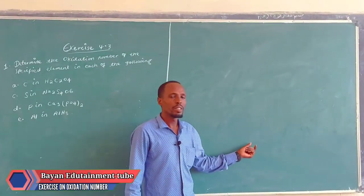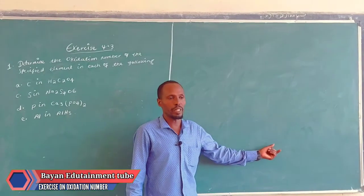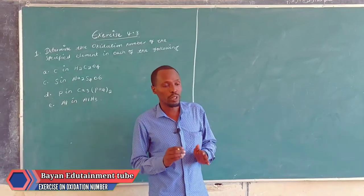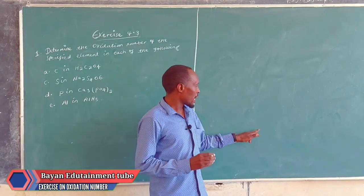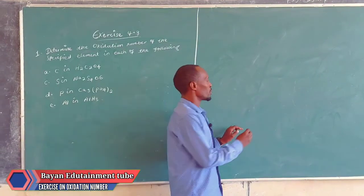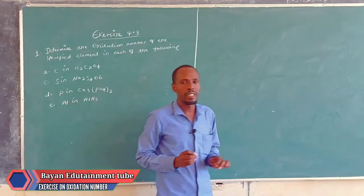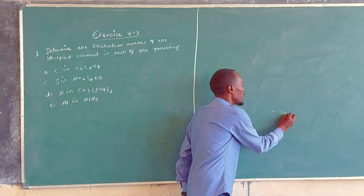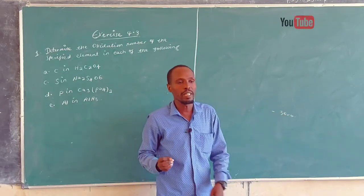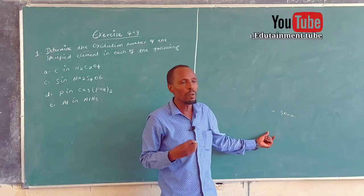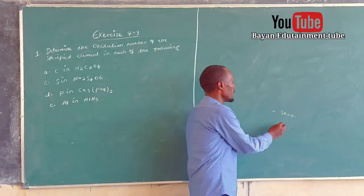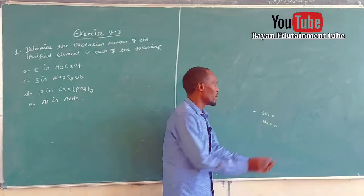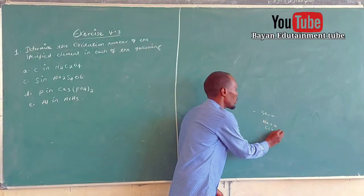We have also seen some of the methods of determining the oxidation number of some elements. The oxidation number of any free element is always zero. For example, if you are given sodium as a free element, its oxidation number is always zero. Chlorine as a free element is also always zero.